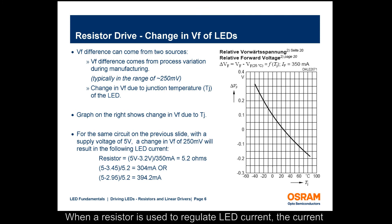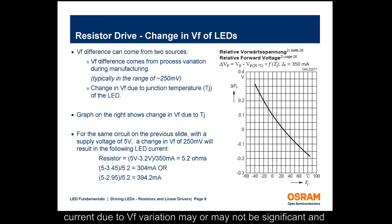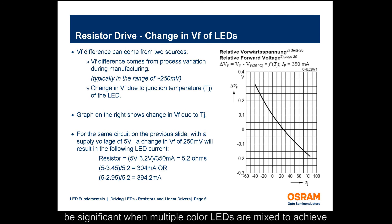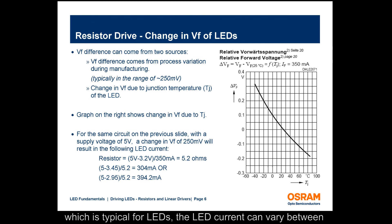When a resistor is used to regulate LED current, the current can vary depending on the VF of the LED. The change in current due to VF variation may or may not be significant, and is highly dependent on the application. For instance, this may be significant when multiple color LEDs are mixed to achieve a target color point. Even with a VF difference of 250 millivolts, which is typical for LEDs, the LED current can vary between 304 milliamps and 394 milliamps for the same resistor.